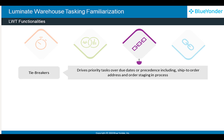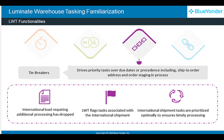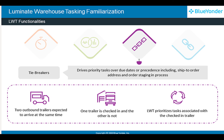LWT drives the priorities of each task from factors other than due dates or precedents, including ship-to order address in case of an international shipment, and order staging in process. For instance, in case of an international load that requires additional processing, LWT flags tasks associated with that load and ensures its timely processing. In another situation where two outbound trailers are expected to arrive at the same time but only the first trailer has checked in, LWT prioritizes tasks associated with the checked-in trailer.